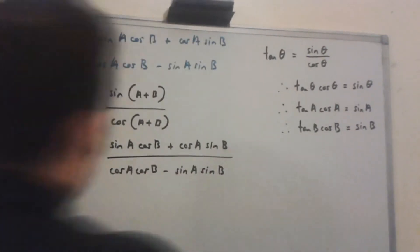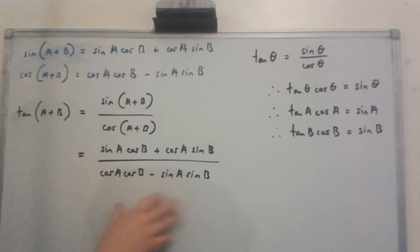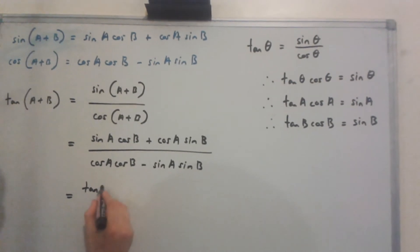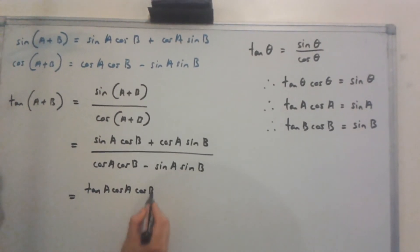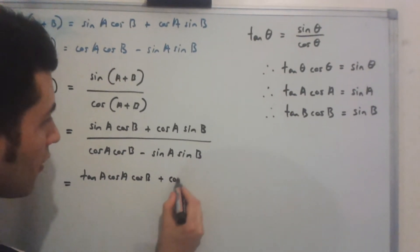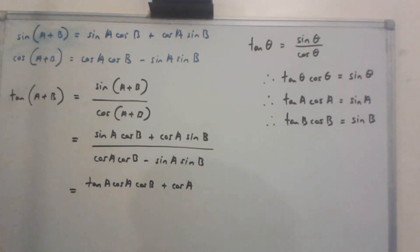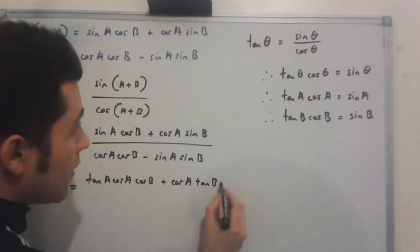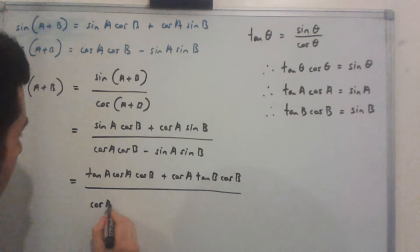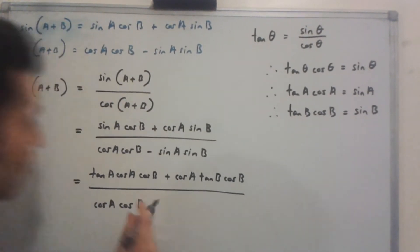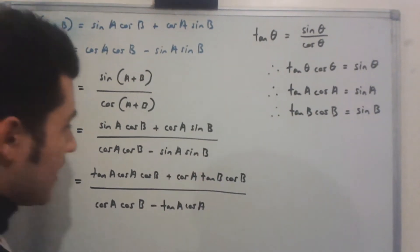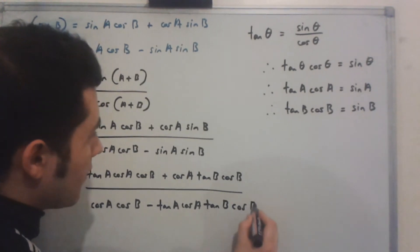Knowing this, let's transform this expression. We know that sin a is equal to tan a·cos a, so we get tan a·cos a multiplied by cos b, plus cos a — and sin b is equal to tan b·cos b — over cos a·cos b minus sin a, which is tan a·cos a, and sin b is tan b·cos b.